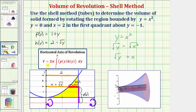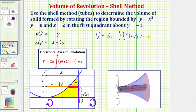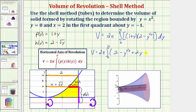Now we have all the information needed to set up the integral. The volume V equals two pi times the integral from zero to four of p(y) times h(y), which is the quantity one plus y times the quantity two minus y to the one-half, integrated with respect to y. Expanding the product: two minus y to the one-half plus two y minus y to the three-halves.